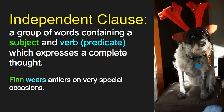There are two types you'll hear when learning about fragments and run-ons. An independent clause is a sentence — a group of words that contains a subject and a verb and expresses a complete thought that can stand on its own. For example: 'Finn wears antlers on very special occasions.' Finn is the subject, wears is the verb. The predicate — everything else in the sentence that helps you understand the verb — is 'wears antlers on very special occasions.' Together, the subject and predicate express a complete thought.